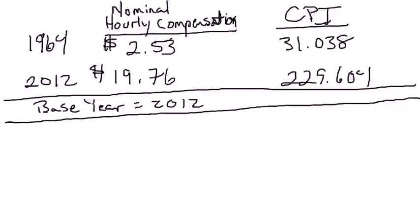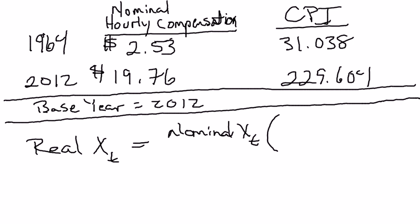Real values or real variables in general: the real value of X at some time period is equal to the nominal value of X times the ratio of prices — the price in the base year divided by the current price level. In previous examples, we've always had the base year index set to 100. With the consumer price index, that base period is 1982 to 1984, which makes things a little more complicated.